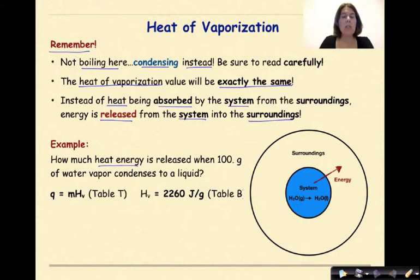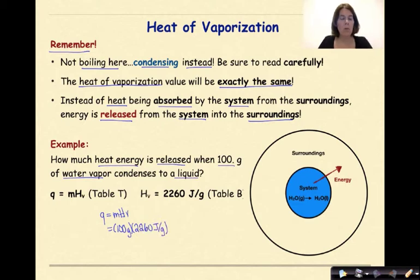So let's look at an example. How much heat energy is released when 100 grams of water vapor condenses to a liquid? The formula that we're going to use is right off of table t, where q equals mhv. The mass of water that we're dealing with here is our water vapor, which is 100 grams of water vapor, times the heat of vaporization, which is 2260 joules per gram.